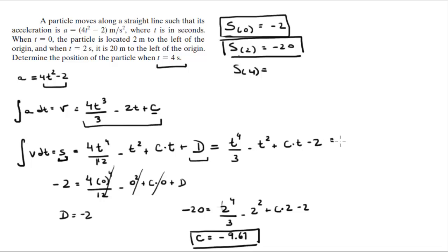So now that we got c, you know that the formula for the position is t to the 4 over 3, minus t squared, minus 9.67t, minus 2. So all you got to do is plug in 4 and replace it for t, and you solve for the position, and you're going to get that the position is equal to 28.65 meters.